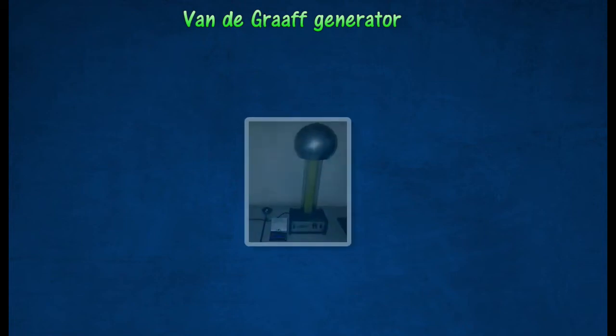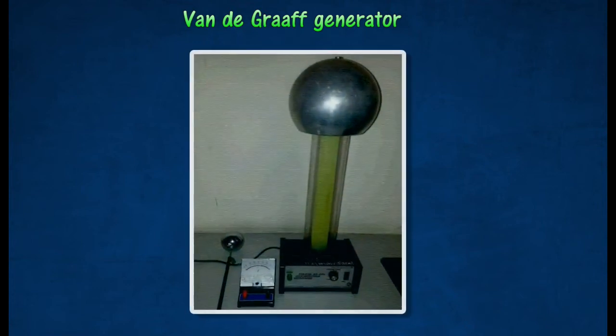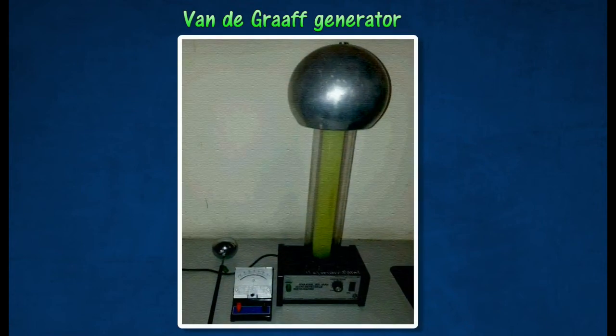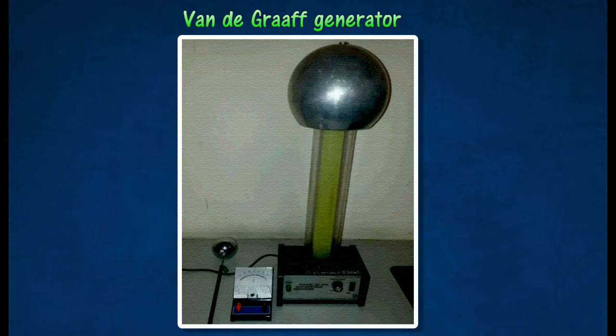A Van de Graaff generator is used as a source of electrostatic charges in laboratory. It can produce a large and continuous supply of electrical charges. When the generator is switched on, the charges on its dome will be passed to the Earth via the microammeter, causing the pointer of the microammeter to be deflected. This shows that an electric current is a flow of electric charges.